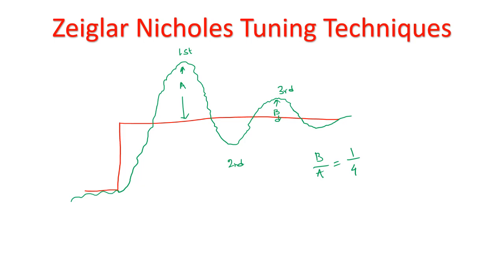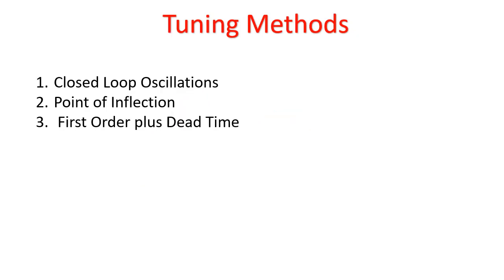Now, how do you get the tuning parameters to achieve such behavior? There are basically three methods: one is closed loop oscillation, another is point of inflection, and the third is first order plus dead time. Let's look into each of these methods.